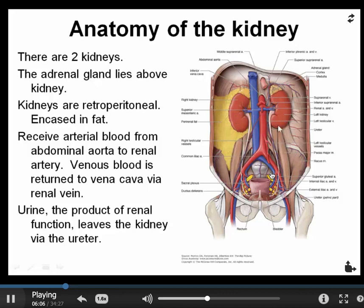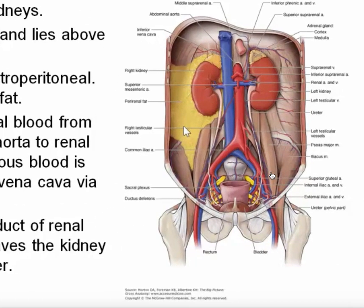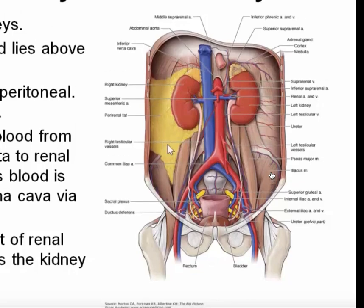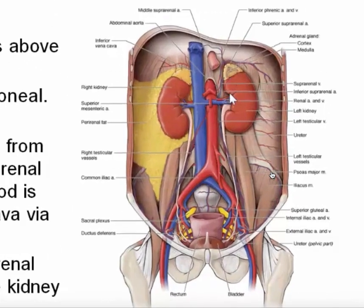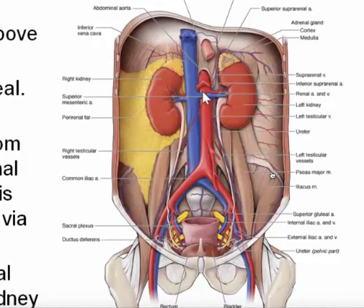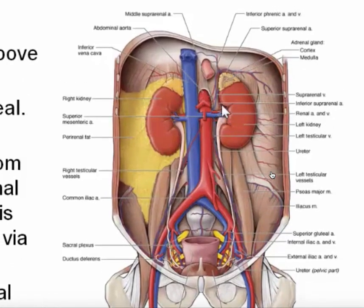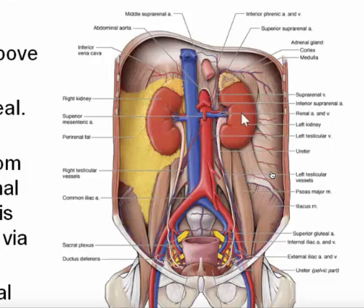The kidneys lie at the back of the abdominal cavity. They're encased in fat, even in skinny people, because it's important that this fat stabilizes the kidney. The kidneys receive arterial blood from the abdominal aorta, which passes through the renal artery and then passes through a very complex pathway of blood vessels, and exits through the renal vein draining into the vena cava. There's another tube system coming out of the kidney — this is the ureter, which carries the product of kidney function, the urine, down to the bladder. So obviously the processes occurring in the kidney involve handling and modification of the blood plasma to produce the urine.